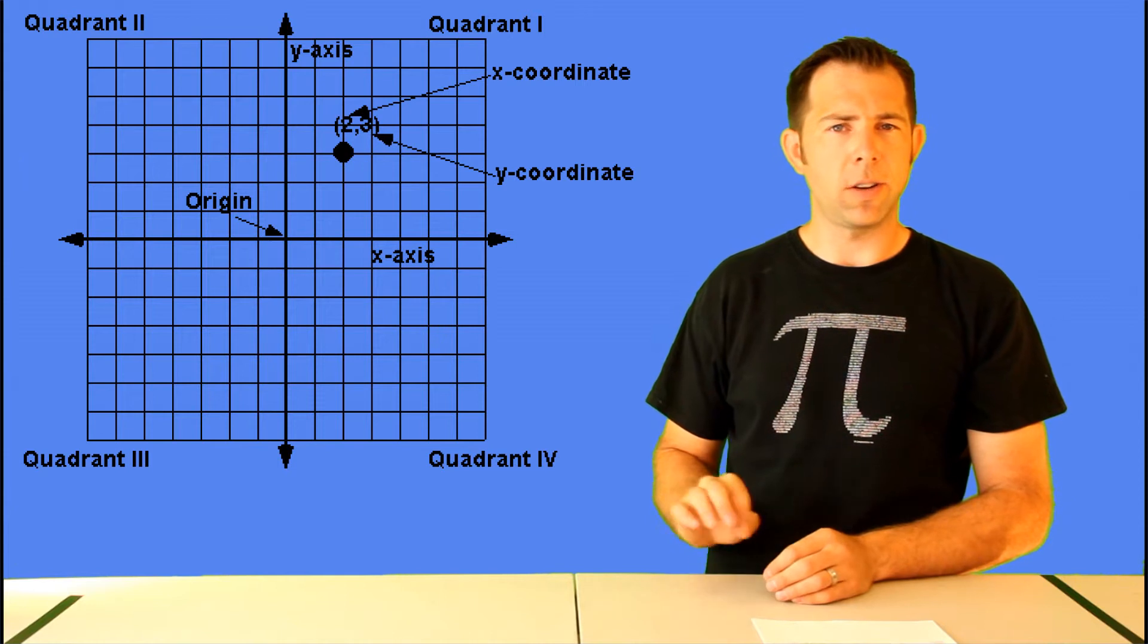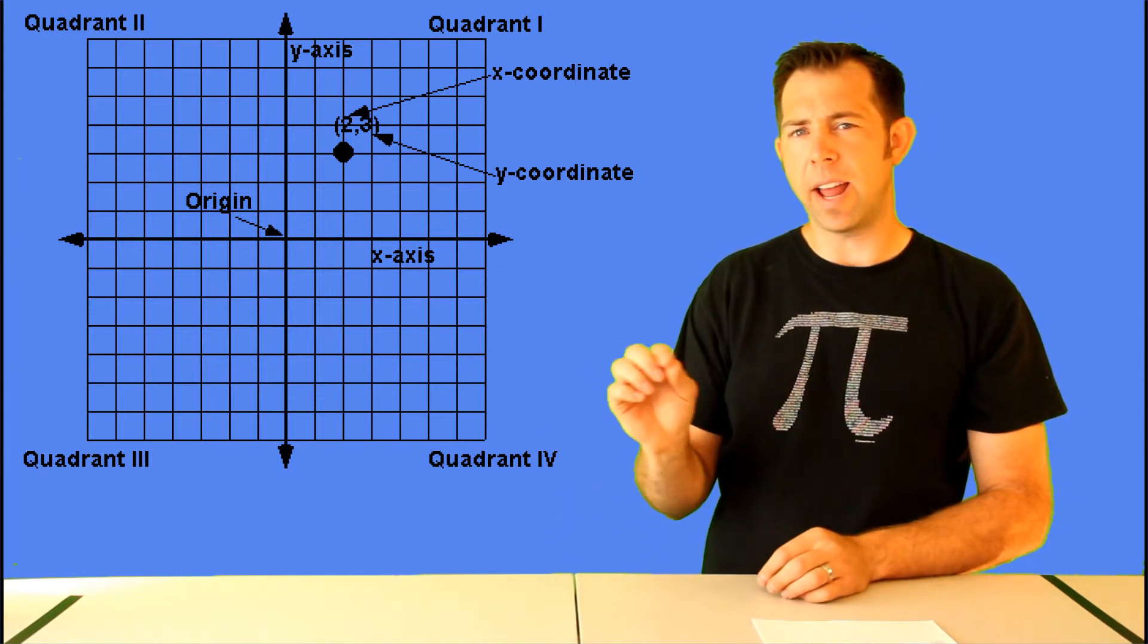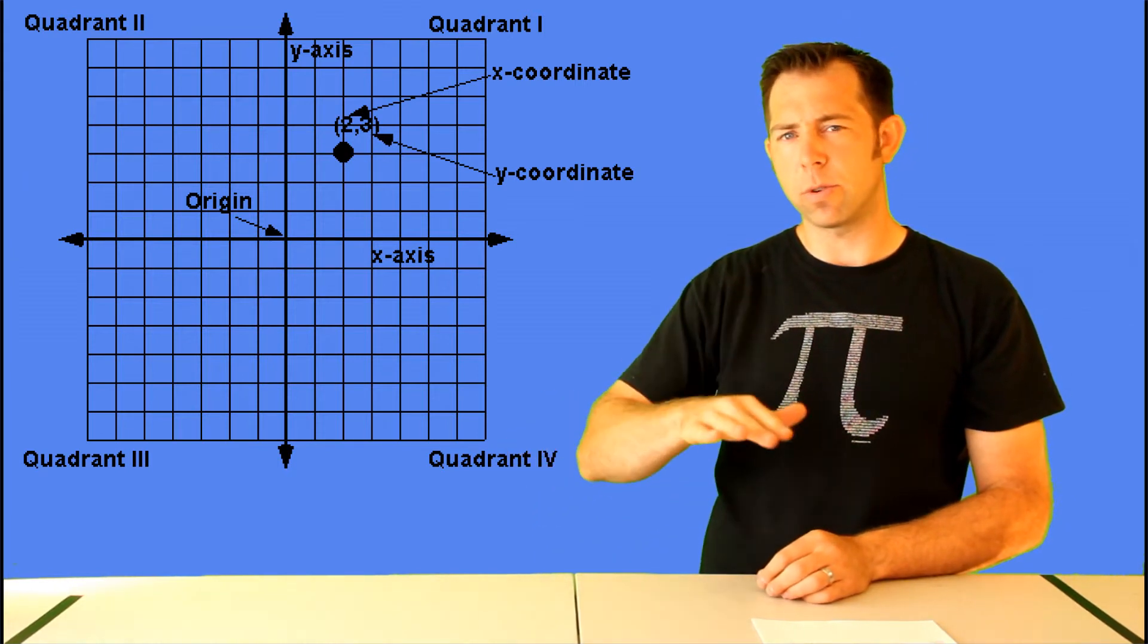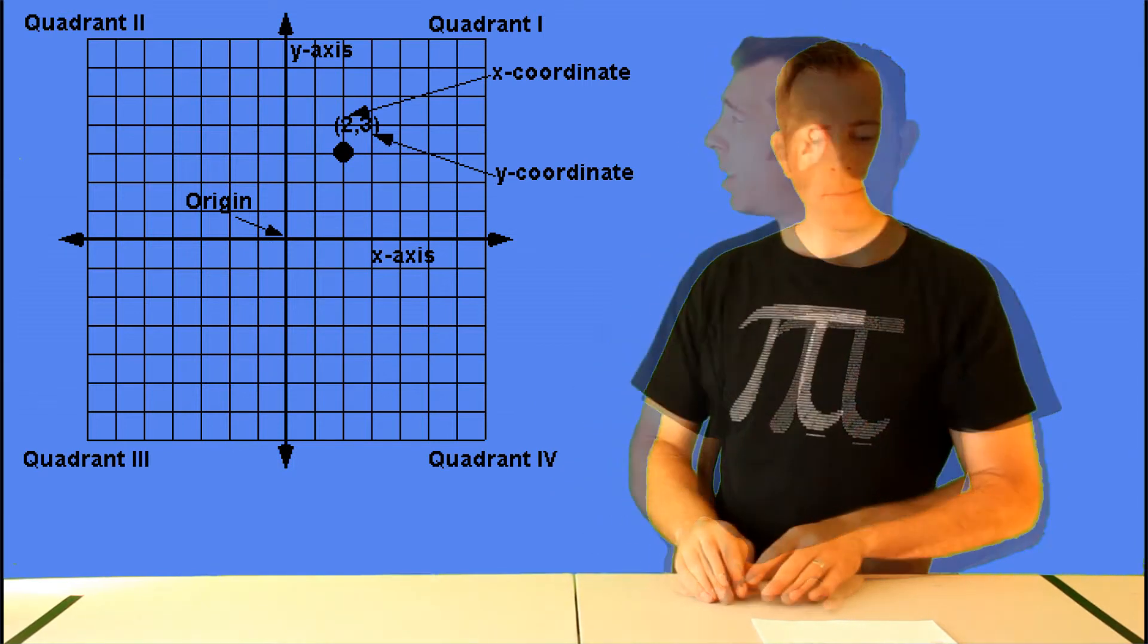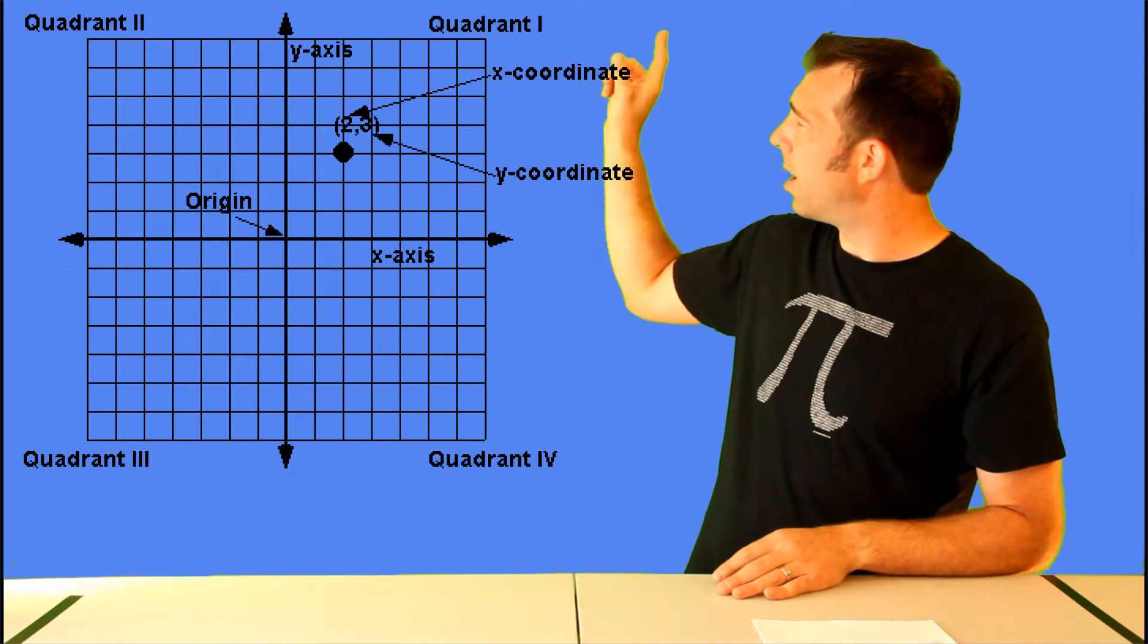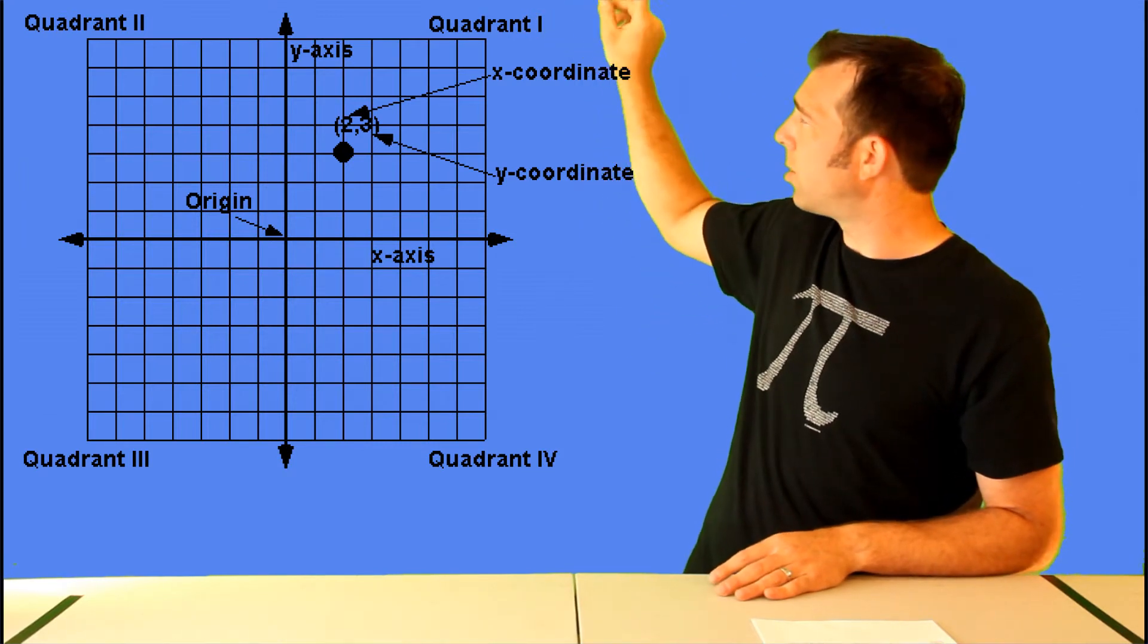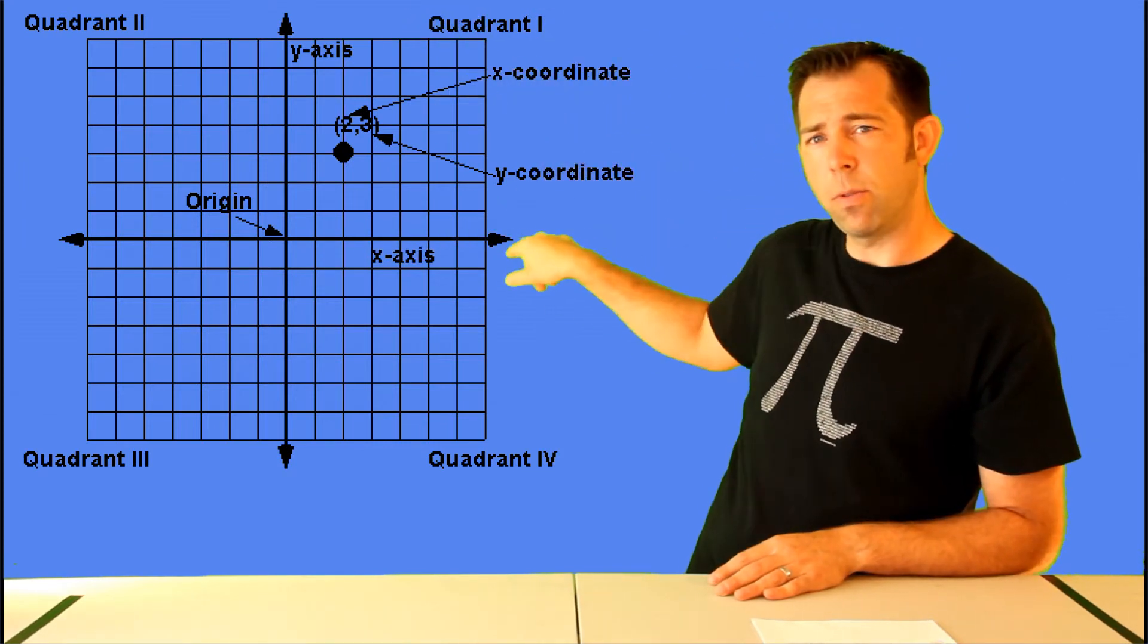The rectangular coordinate plane is simply a grid made up of a horizontal x-axis and a vertical y-axis. Any point on that grid is called an ordered pair, and that ordered pair is made up of an x-coordinate that identifies where the point is horizontally, and a y-coordinate that identifies where the point is vertically. This plane is sectioned off into four quadrants, so we have 1, which is the top right, so it goes 1, 2, 3, 4.